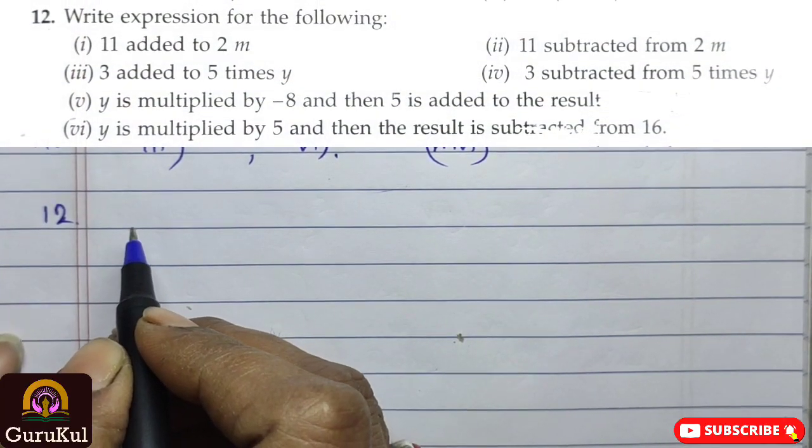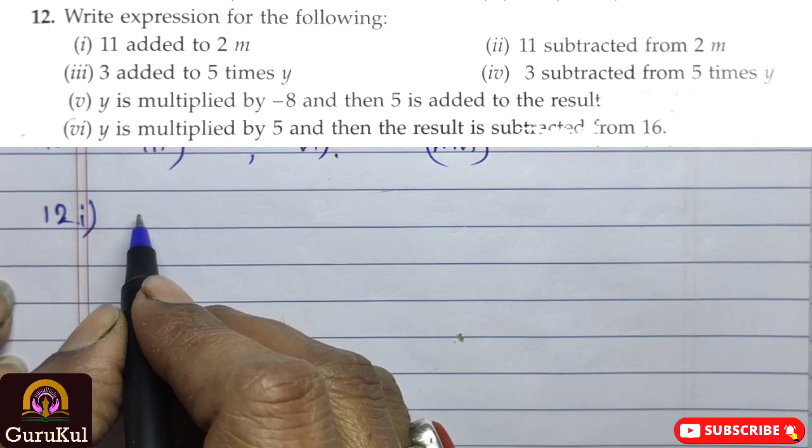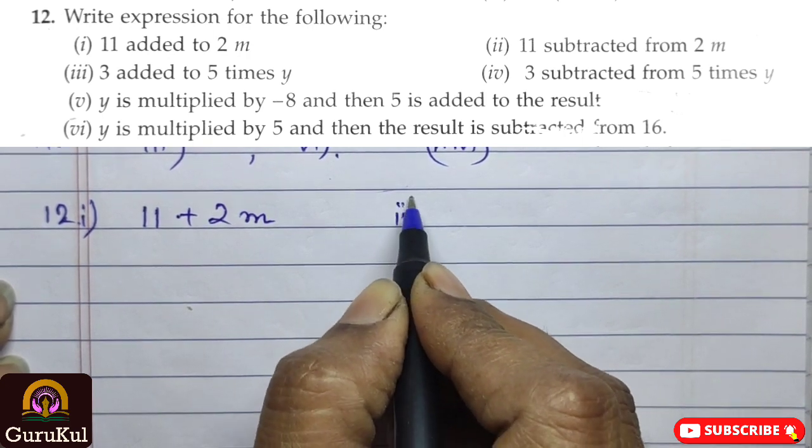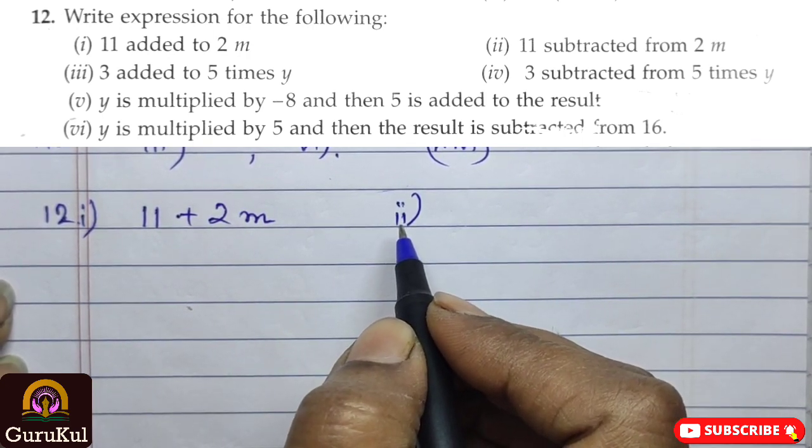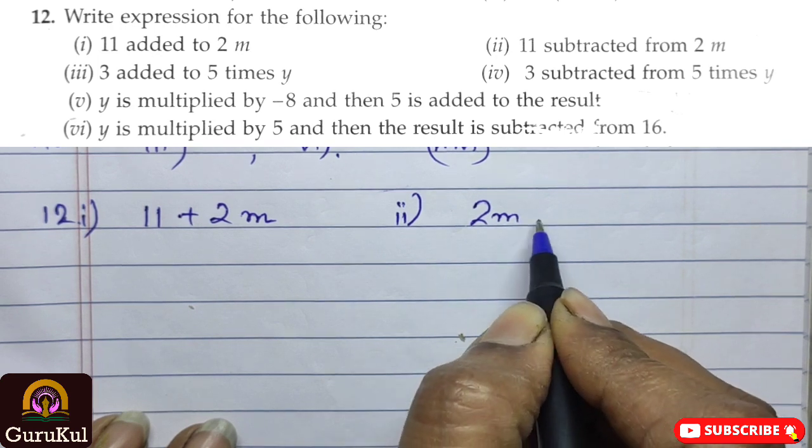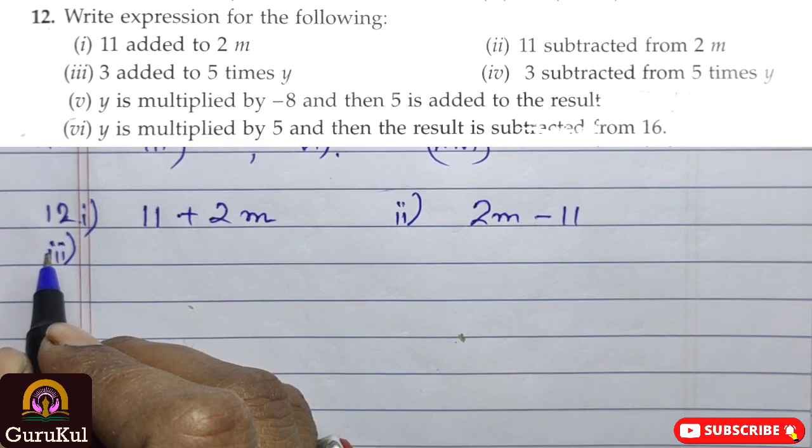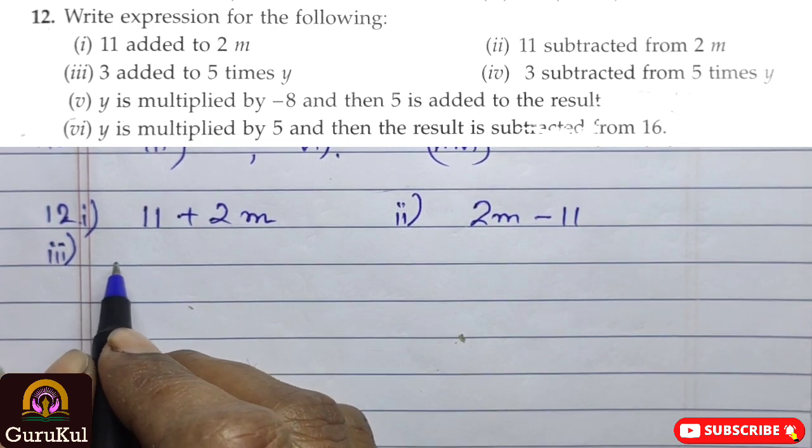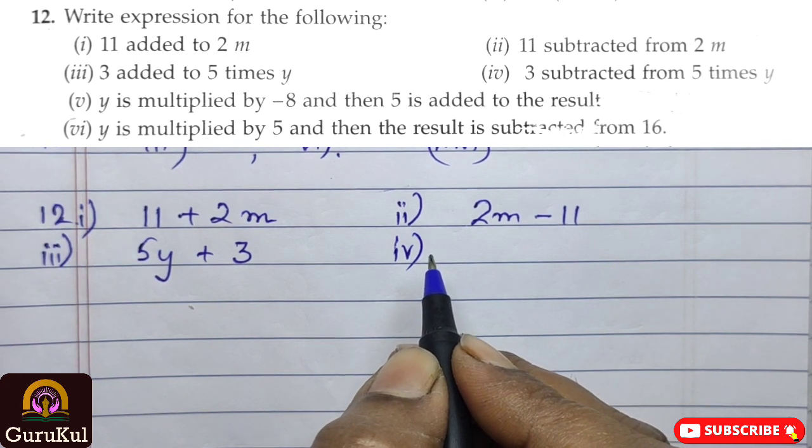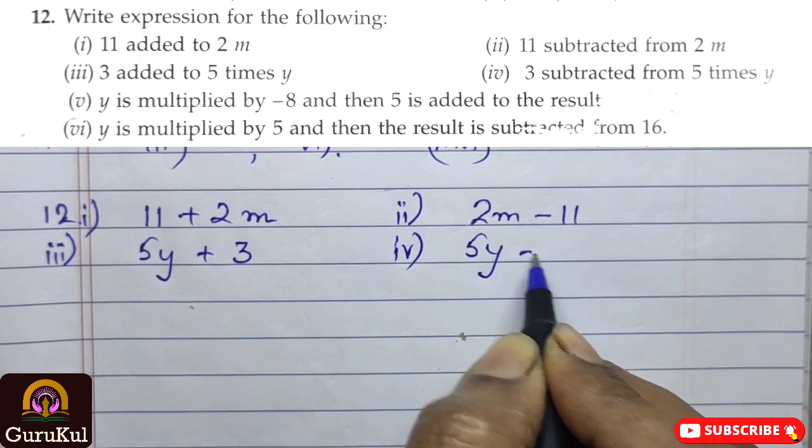Sum number 12, we have to write expressions for the following. The first part is, 11 added to 2m. That means, 11 plus 2m. Second is, 11 subtracted from 2m. So, 2m minus 11. Third part, 3 added to 5 times y. 5 times y means 5y. So, 5y plus 3. Sub part 4, 3 subtracted from 5 times y. So, 5y minus 3.